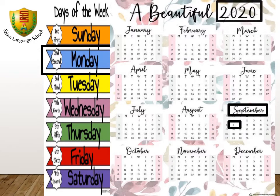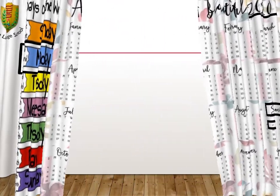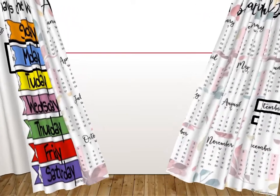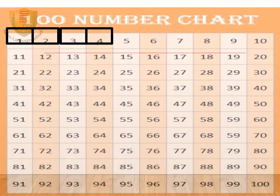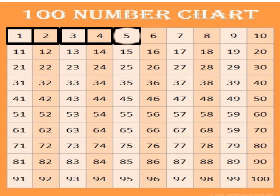Today is Monday, the 7th of September 2020. It's number chart time. I am putting a square around number 5 to show how many days we have been studying these lessons.